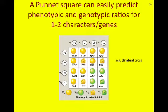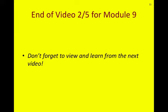Here's an example of a Punnett square for a dihybrid cross, which means you're crossing two individuals that are heterozygous for two different characters — two different genes. You can see that this Punnett square doesn't have four squares, it has 16. A Punnett square can easily predict the phenotypic and genotypic ratios for one to two characters or genes. However, when you start looking at three or more genes, the Punnett square becomes very lengthy, large, and cumbersome. So in the next video, I'll talk about how to use rules of probability to determine genotypic and phenotypic ratios.